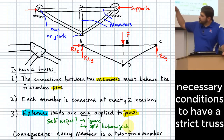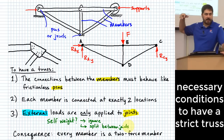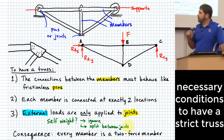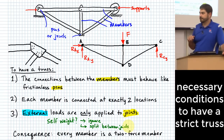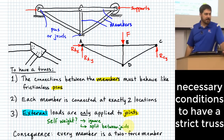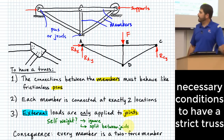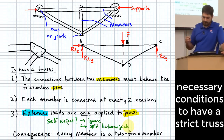The consequence of these three conditions is that every member we have in this structure is going to be what's called a two-force member. Let me make sure we understand what a two-force member is.